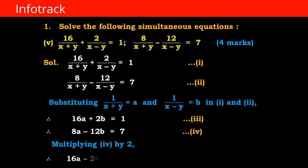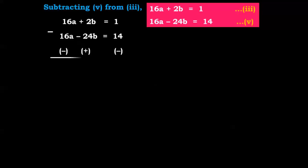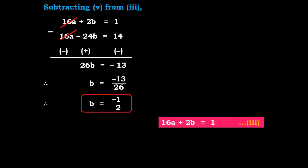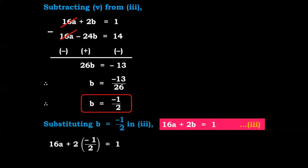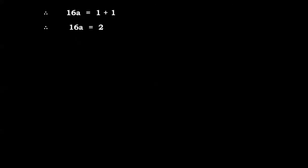And 8a minus 12b equals 7 — equation number 4. Multiplying equation 4 by 2 we get 16a minus 24b equals 14 — equation number 5. Subtracting equation 5 from equation 3: 16a plus 2b equals 1 minus (16a minus 24b equals 14). The 16a terms cancel. 2b plus 24b gives 26b. 1 minus 14 gives minus 13. So b equals minus 13 upon 26, therefore b equals minus 1 upon 2.